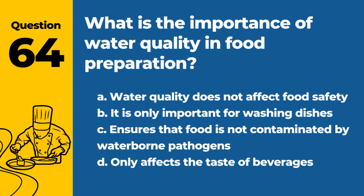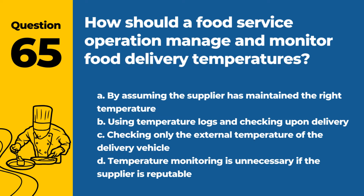Question 64. What is the importance of water quality in food preparation? a. Water quality does not affect food safety. b. It is only important for washing dishes. c. Ensures that food is not contaminated by waterborne pathogens. d. Only affects the taste of beverages. Answer: c. Ensures that food is not contaminated by waterborne pathogens. Good water quality is crucial for overall food safety.